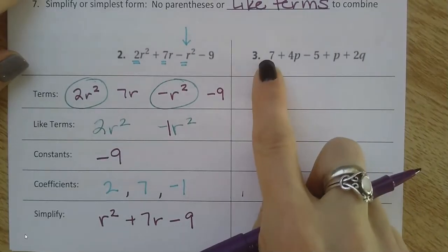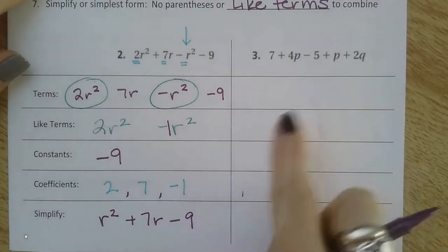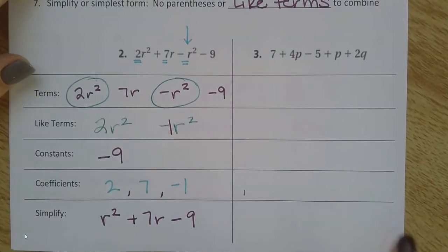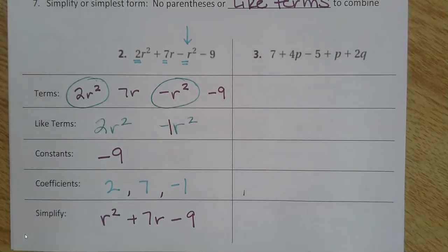So you're going to do number 3. Write out the terms, like terms, constants, coefficients, and simplify it. Put any like terms that you have together. Pause right now and hit play when you're ready to check.